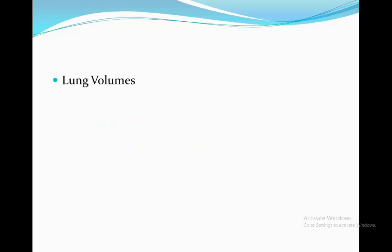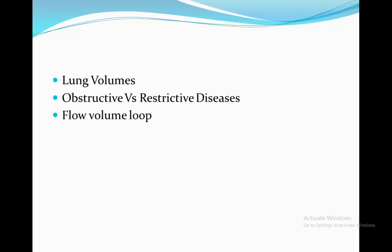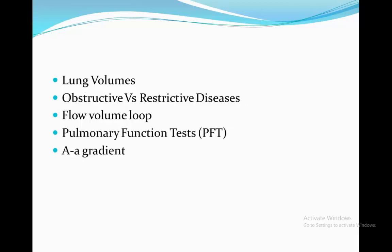We'll be going over the lung volumes, then comparing and differentiating between obstructive and restrictive diseases. We'll look at the flow volume loop diagram. We'll go over the pulmonary function test and its components, and finally we'll go over the AA gradient.